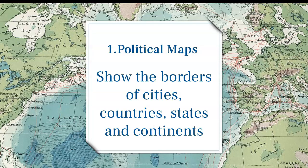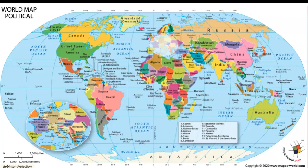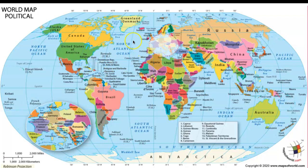The first map we're going to look at is a political map. A political map shows the borders of cities, countries, states, and continents. Here's an example of a political map — this one shows all of the countries. You can see down here is Brazil, there's a border between Brazil and Bolivia, Peru, Paraguay. Here you have Mexico with a border with the United States, a border with Guatemala, a border with Belize. Now if a country is an island, technically the ocean is that border. So this is a world political map.